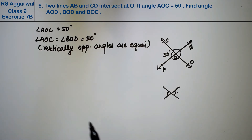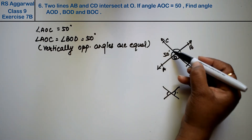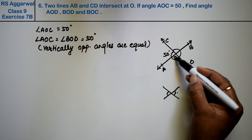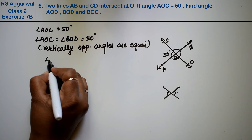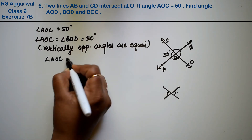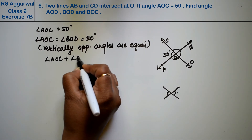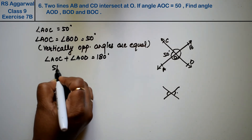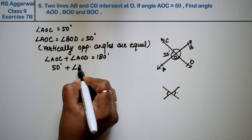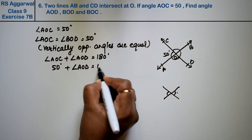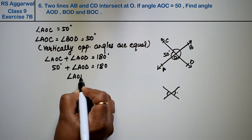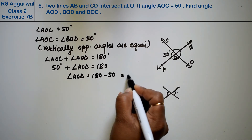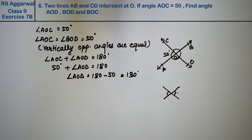Now, the next thing: what is a straight line? A straight line equals 180 degrees. So, angle AOC plus angle AOD equals 180 degrees. Angle AOC is equal to 50 degrees, so angle AOD equals 180 minus 50, which is 130 degrees.